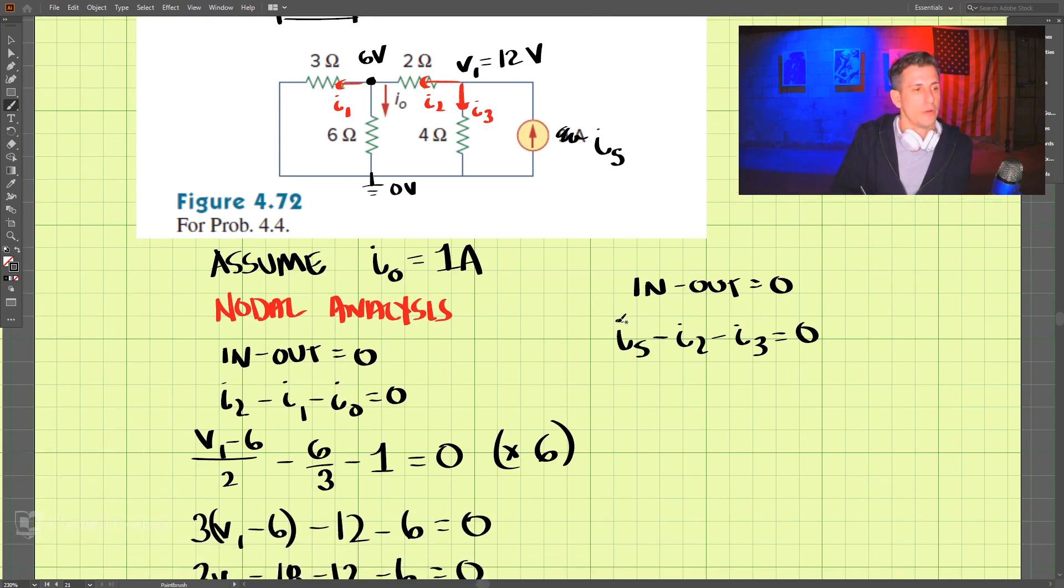We have is, and i2 is equal to 12 minus 6 divided by 2, so that would be 6 divided by 2, that's 3. And then i3 here is 12 divided by 4, this resistance here, 12 divided by 4.